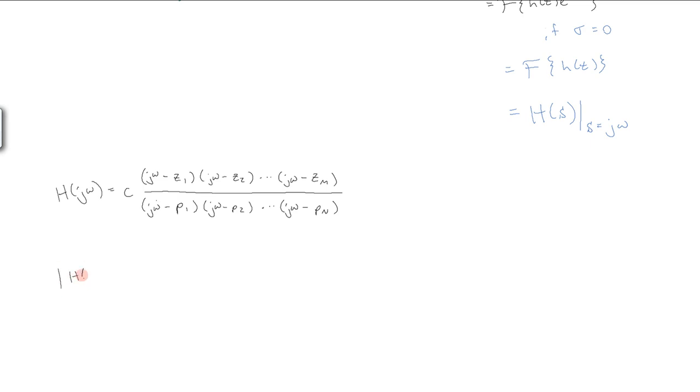The magnitude of h of j omega is equal to the magnitude of this entire thing, well that's just going to be the magnitude of this constant c that gets factored out front, times the magnitude of each one of these individual terms.